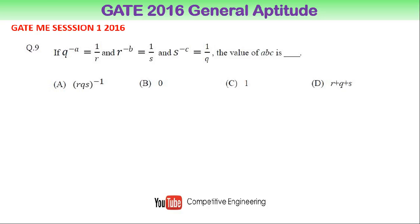The question is: if Q^(-A) = 1/R and R^(-B) = 1/S and S^(-C) = 1/Q, the value of ABC is: (A) (RQS)^(-1), (B) 0, (C) 1, (D) R+Q+S.